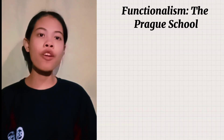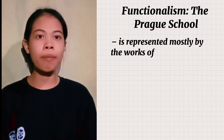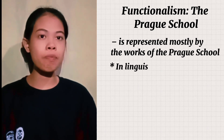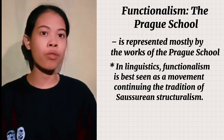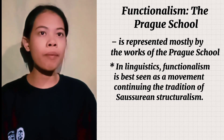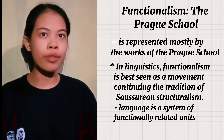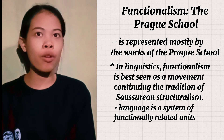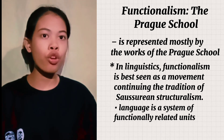The second principle is functionalism, the Prague school. Functionalism is represented mostly by the works of the Prague school. In linguistics, functionalism is best seen as a movement continuing the tradition of Saussurean structuralism. The main claim of this approach is that language is a system of functionally related units. The primary function of language — phonological, grammatical, and semantic — is a communicative one: language is used by people to communicate.